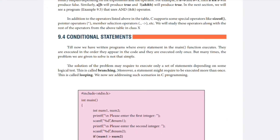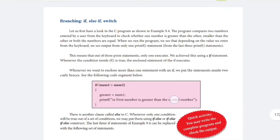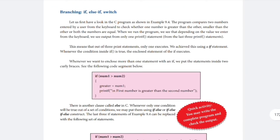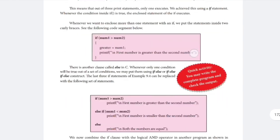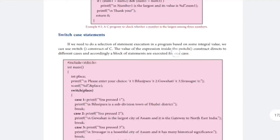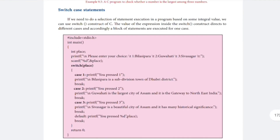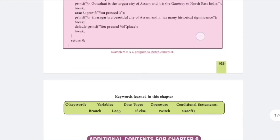After operators, conditional statements will come. Why do we use conditional statements? When we have to check some conditions in our program, we use conditional statements. Branching with if and else-if will likely be asked. The different forms of if are: if, if-else, and if-else-if. The switch statement may not be required as it was omitted.